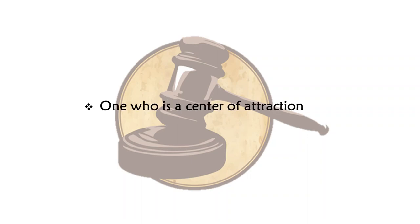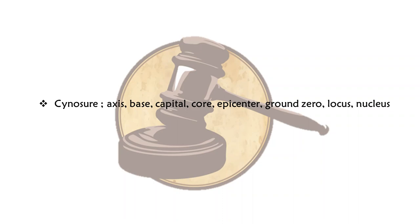One who is the center of attraction — a person, thing or basically anything which is the center of everyone's attention — that would be called a cynosure. The synonyms are axis, base, capital, core, epicenter, ground zero, locus and nucleus.